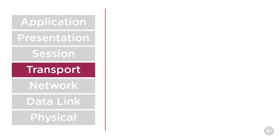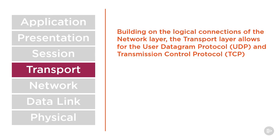The transport layer of the OSI model is the fourth layer, and it builds upon the logical connections of the network layer via the user datagram protocol, or UDP for short, and transmission control protocol, or TCP for short.